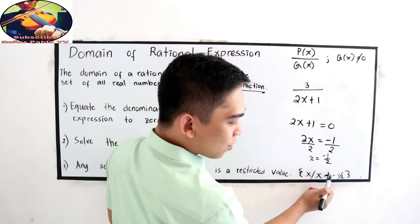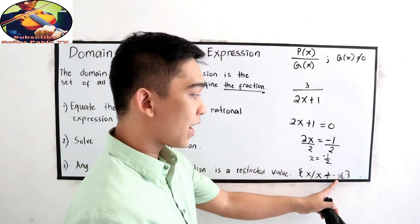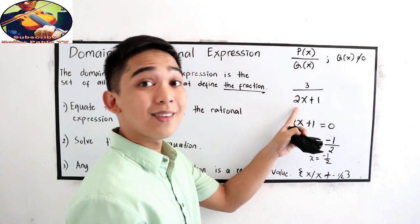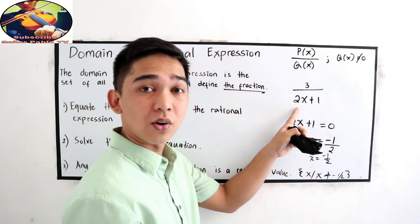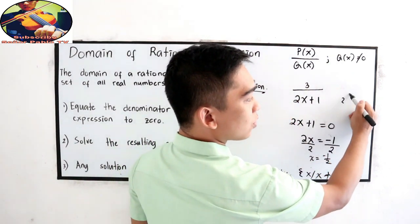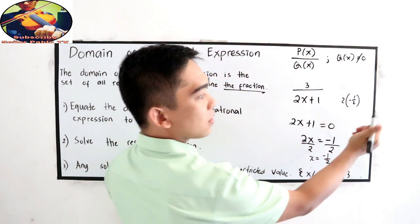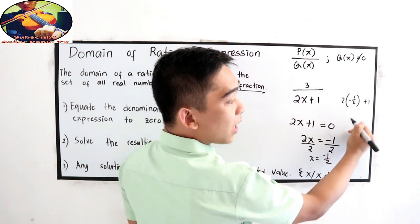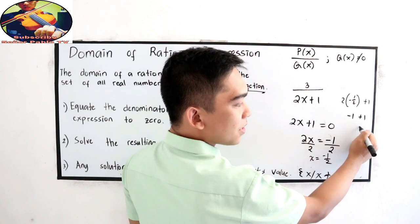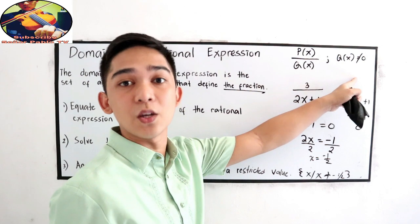X such that X is not equal to negative one-half — because if X is negative one-half, substituting into the denominator gives 2 times negative one-half plus 1, which equals negative 1 plus 1, and the sum is zero. Our condition states the denominator must not be equal to zero.